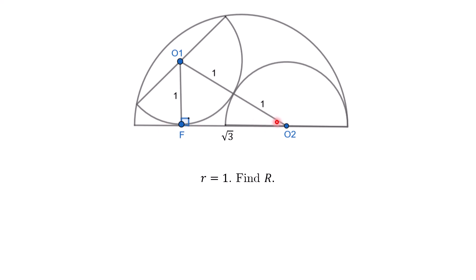So we have length 2 here, length 1 here, which leads us to conclude that this length here is square root 3.